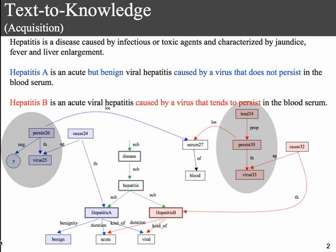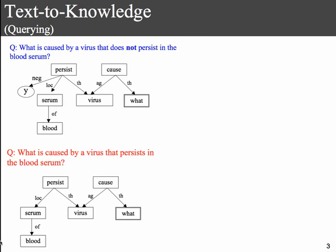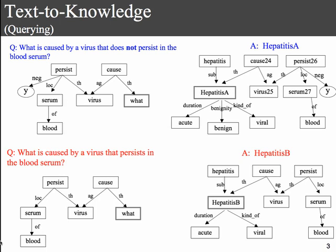Once we acquire this knowledge, we also want to be able to query it in natural language. We want to pose questions in natural language and obtain focused answers at the concept level. The technique is to transform questions into a graph-based meaning representation, and then question answering happens by doing graph matching, where, for example, 'what is caused by a virus' is matched with the concept, and we retrieve all the concepts related with that.